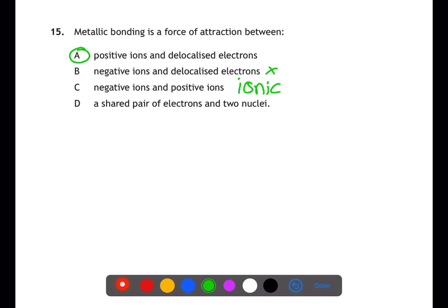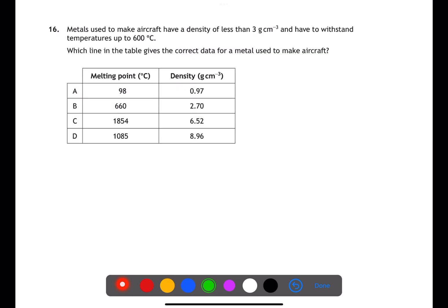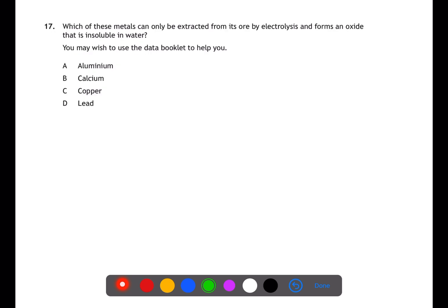Question 16 gives you information to compare to the table. First, the melting point needs to be above 600 degrees, which eliminates A. Density needs to be below three, so of the three options left, only B can be the answer.